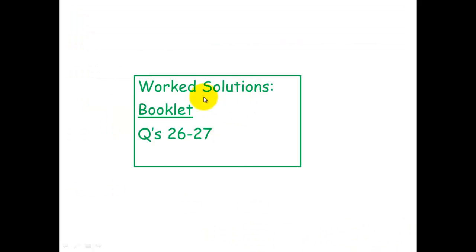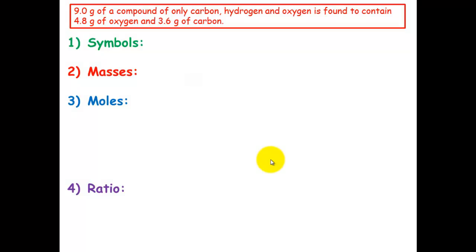I'm going to do the work solutions here for the booklet questions 26 and 27. So if you'd like to see some more examples, have a look at these, or if you're having trouble with them. Otherwise, you can stop watching this video now. So 9 grams of a compound of only carbon, hydrogen, and oxygen is found to contain 4.8 grams of oxygen and 3.6 grams of carbon. So step one, write down your symbols, carbon, hydrogen, and oxygen.